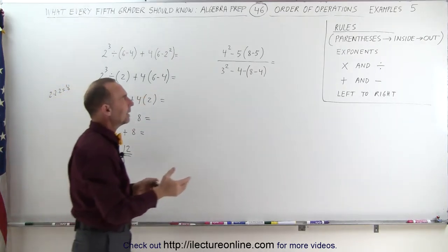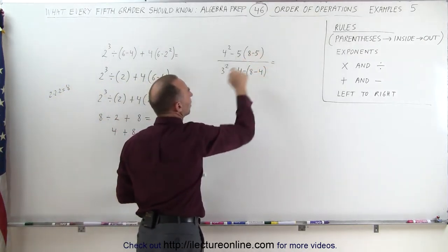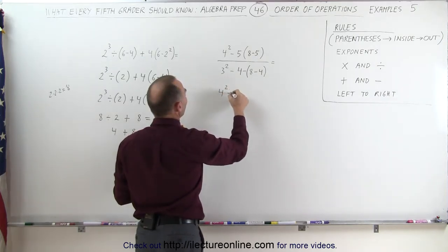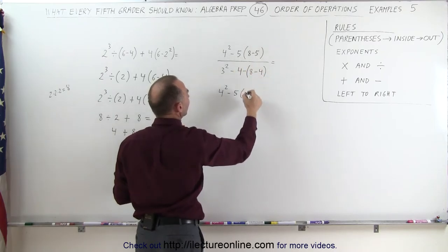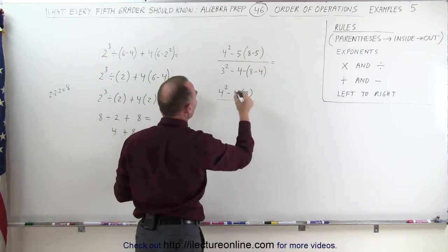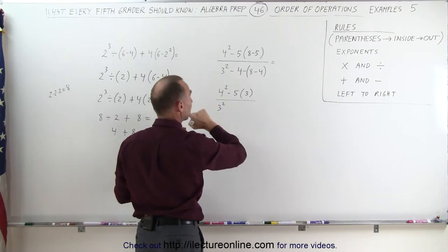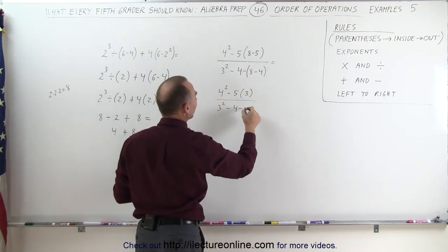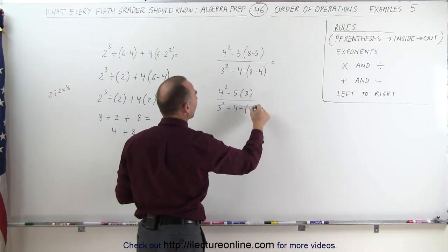Let's take a look at this one here. Again I want to concentrate on what's inside the parentheses first. So we rewrite this as 4 squared minus 5 times 8 minus 5 is 3 and in the denominator I get 3 cubed, no not 3 cubed, 3 squared minus 4 minus what's inside the parentheses, 8 minus 4 which is 4.